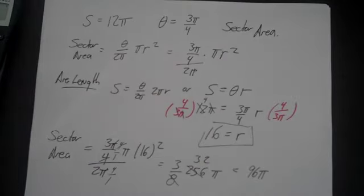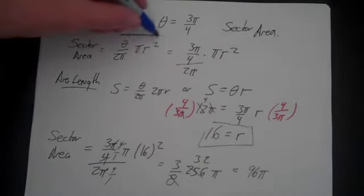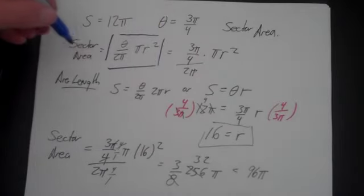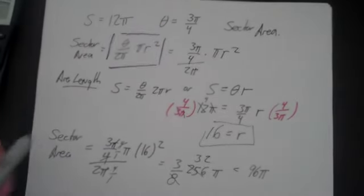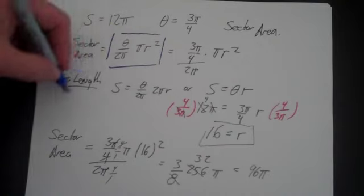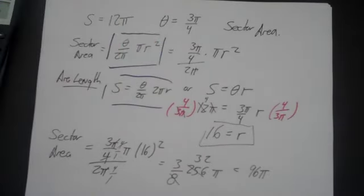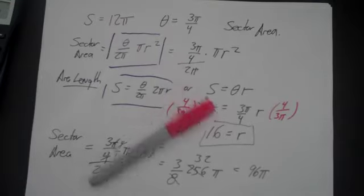We're basically, if we back up for a minute, we're just using our sector area formula. The only problem is we don't have r. So we use our arc length formula to find r and then we plug it in. And then we're done with sector area problems.